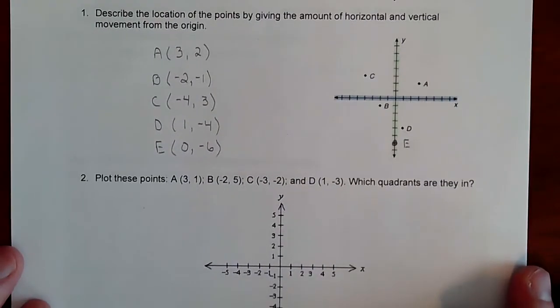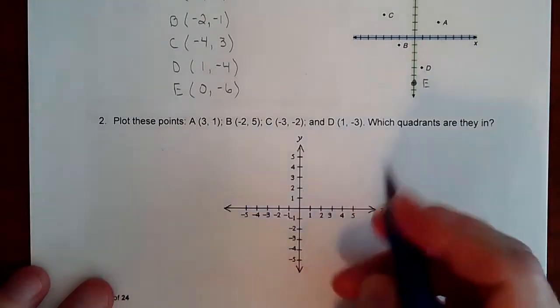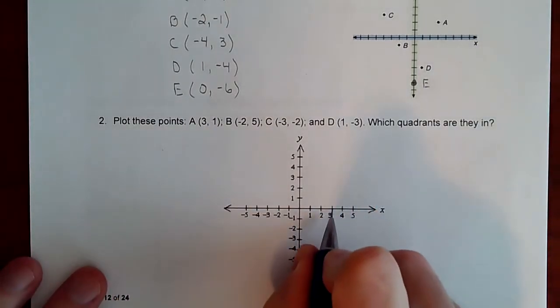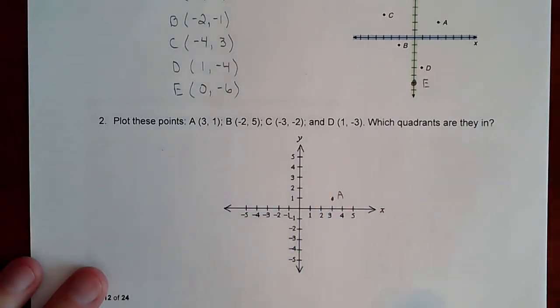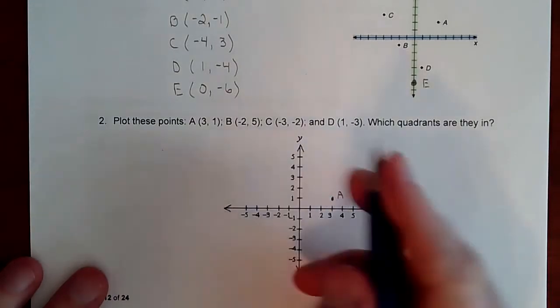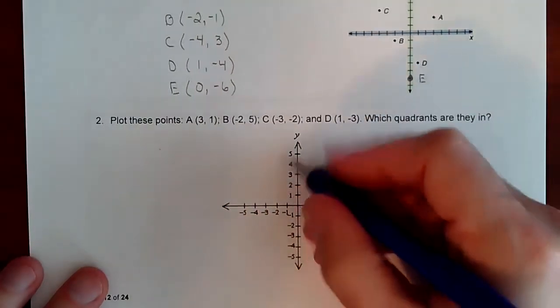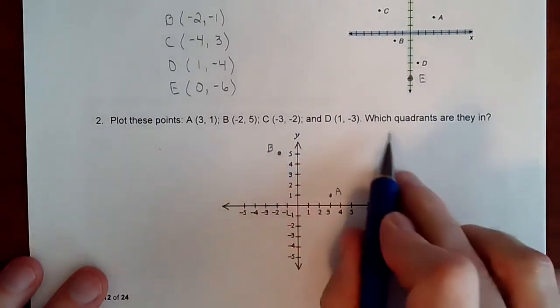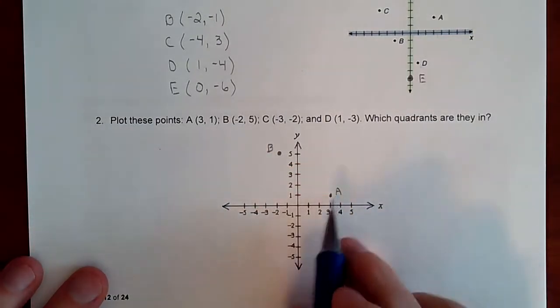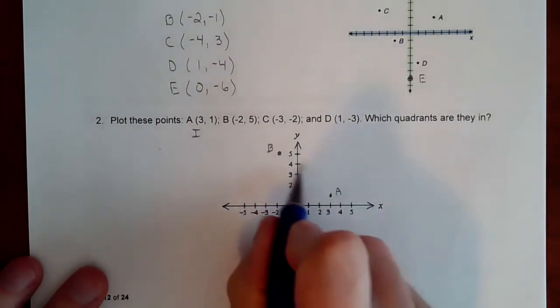Let's plot a couple points. If point A was at (3, 1), we would go to the right three, up one. That's point A. Point A is in the first quadrant. And then point B is left two, up five, at (-2, 5). So left two, up five. That's point B. Point B is in the second quadrant.